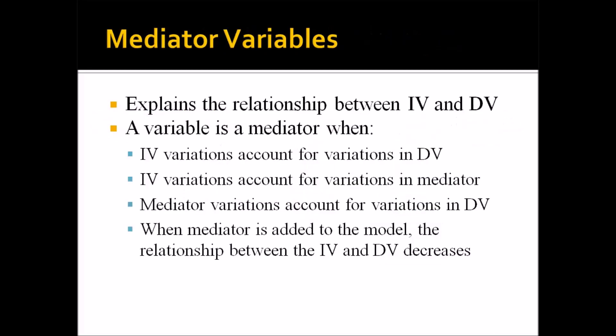Now let's look at mediator variables. Moderator variables affect the strength and/or direction of the relationship between the IV and DV. Mediator variables are different — they explain why or how the relationship exists. You can tell when a variable is a mediator when four conditions are met. First, independent variable variations account for variations in the dependent variable — meaning there's a relationship between IV and DV. Second, independent variable variations account for variations in the mediator (the presumed mediator, since you're still testing for it), so there's a relationship between the IV and the mediator.